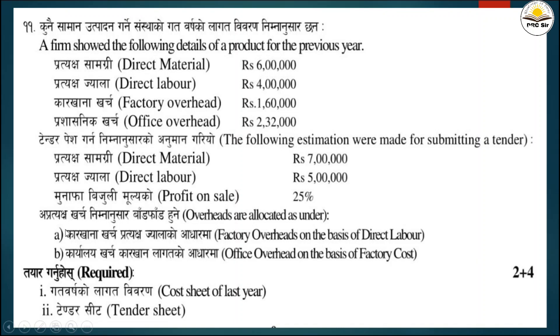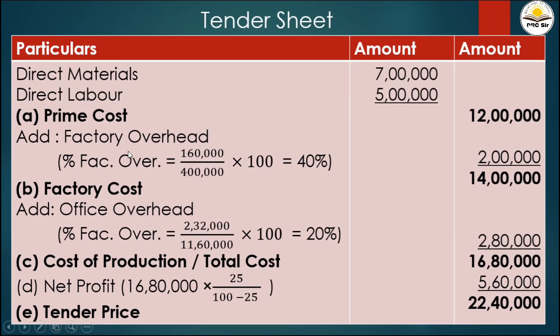Next we add factory overhead. The question states factory overhead is on the basis of direct labor. We need to calculate the percentage from the cost sheet and use that value in the tender sheet.